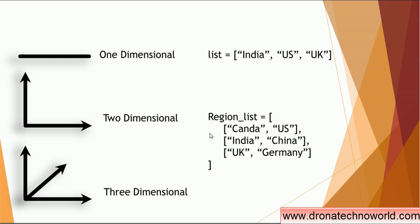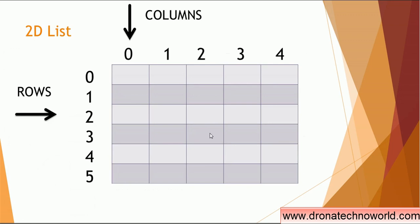We'll see the three-dimensional example in our upcoming tutorial. Today's focus is on how to work with two-dimensional objects. Two-dimensional variables come with two types of values arranged in rows and columns. In a 2D list we have columns and rows. Rows start with index zero and increment by one — zero, one, two, three, and so on. Columns also start with index zero and increase to one, two, three, and so on. Always keep in mind the index always starts with zero for the first column or first row.